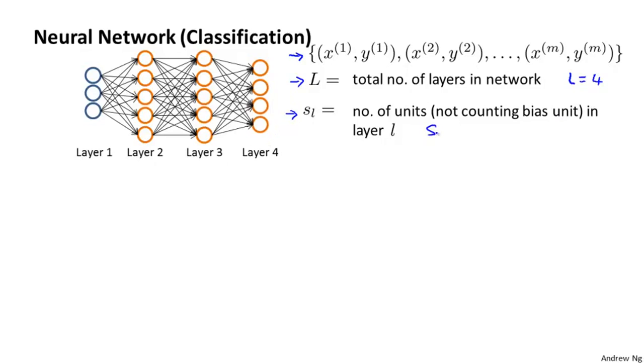For example, we would have S_1, which is the input layer, equals 3 units. S_2, in my example, has 5 units.